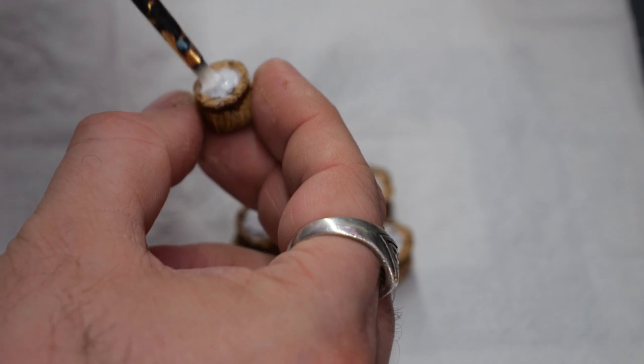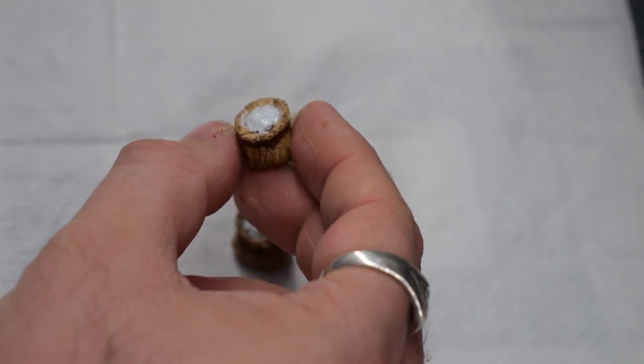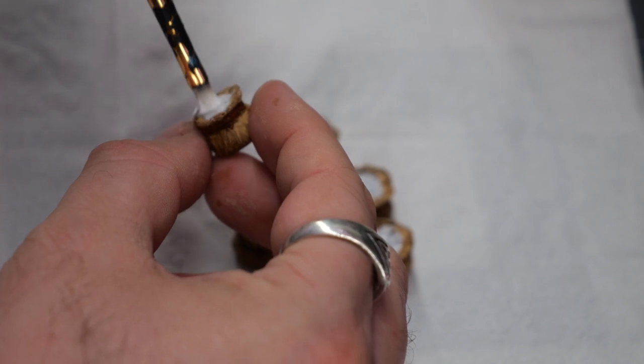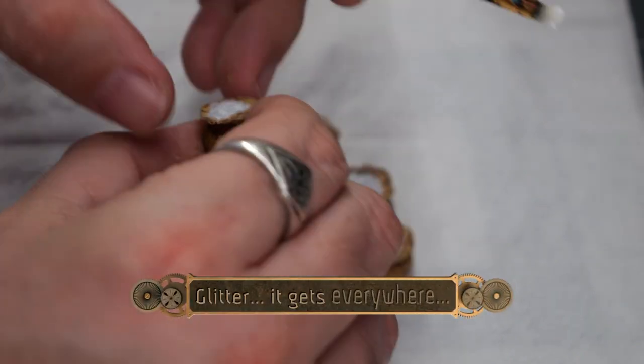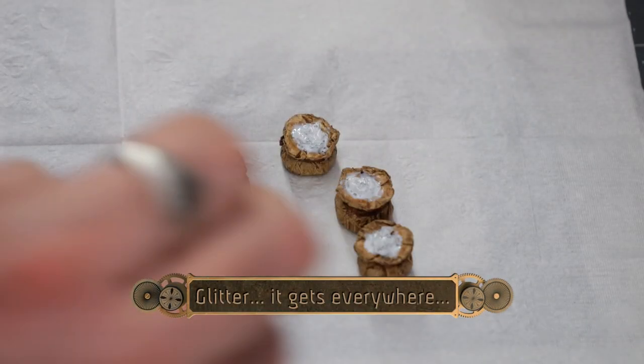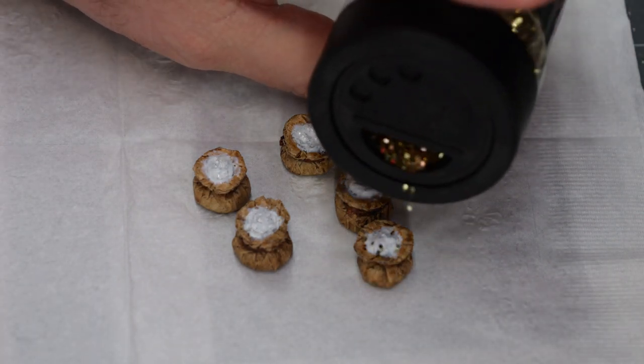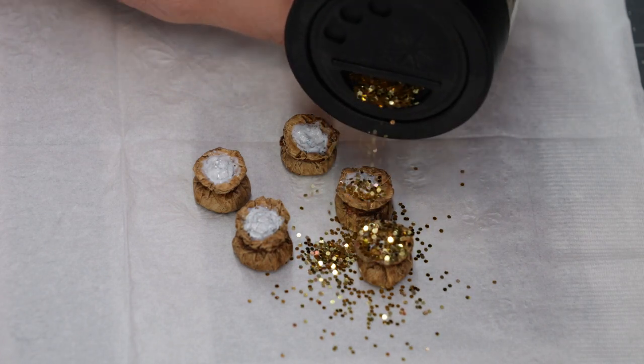So now we're going to use some Mod Podge. I definitely would recommend a very strong glue for this. You don't want the glitter coming off once you're done. So just paint over the top of it. Make sure to leave the edges of the top of the sack unpainted with the glue.